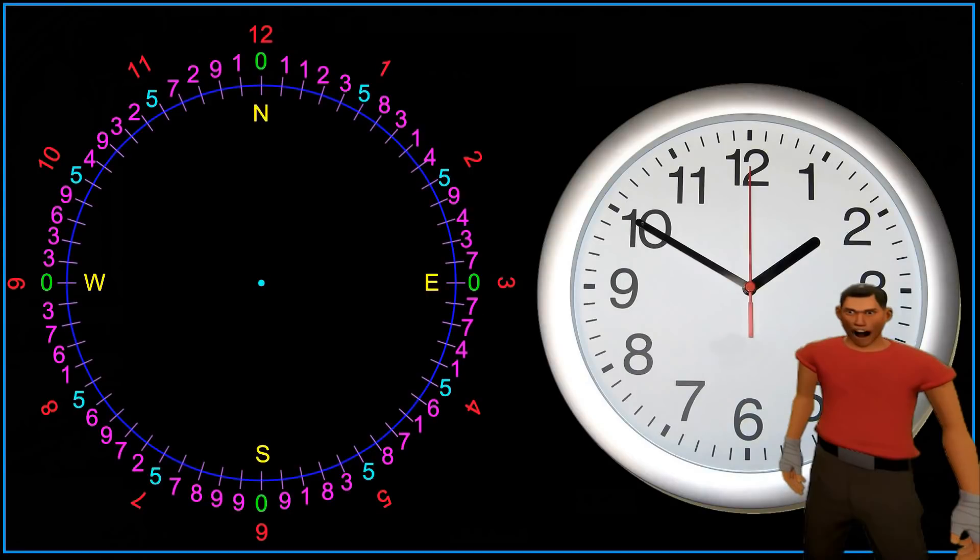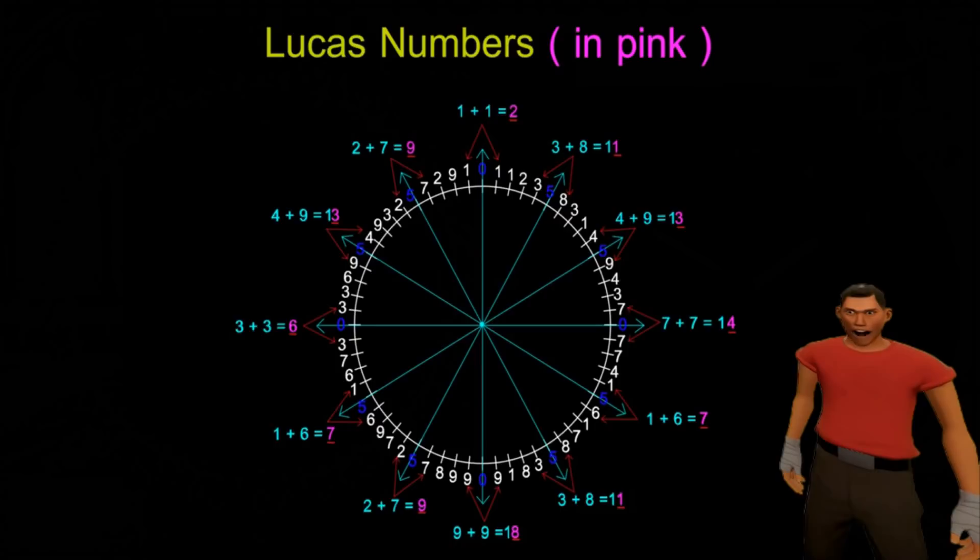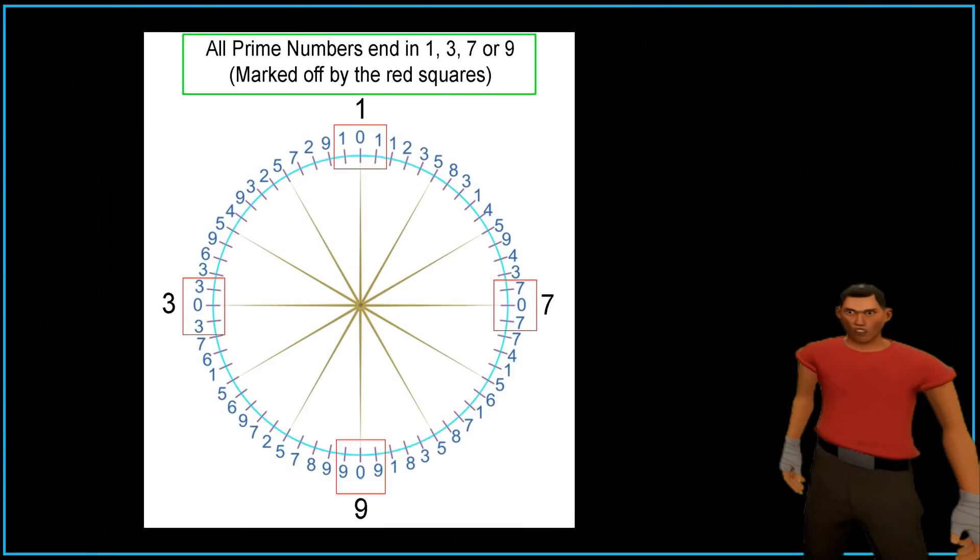The intelligence that designed this and built it into the very fabric of our universe is beyond human comprehension. You would have to be a fool to believe that this cipher is pure coincidence. It codes for all Fibonacci numbers, all Lucas numbers and all prime numbers. And yet, that is still not all that is hidden in this cipher.